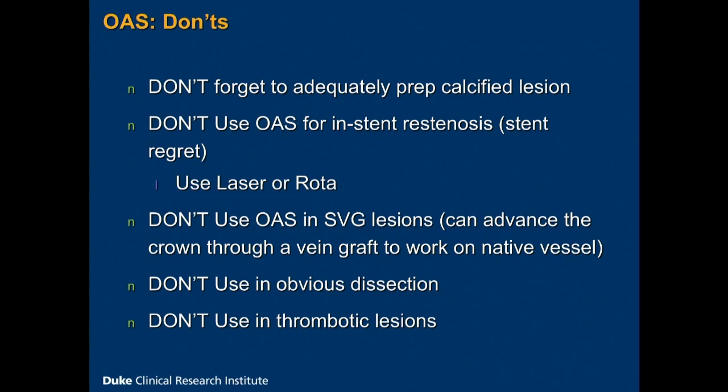There are some don'ts with this device — which probably apply to rotational atherectomy as well. If you have a calcified lesion, don't forget to adequately prep it. You can really get into trouble with a lesion that appears calcified on angiography but may seem less so. The last thing you want is stent regret, because that prolongs your day, increases the risk for stent thrombosis, and increases the risk for in-stent restenosis. A major difference between orbital and rotational atherectomy: you should not use orbital for in-stent restenosis. If you have stent regret, don't pull out the orbital atherectomy device — use laser, or use rotational atherectomy to ablate the stent and then restent that area.